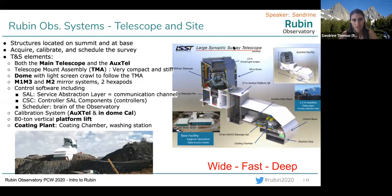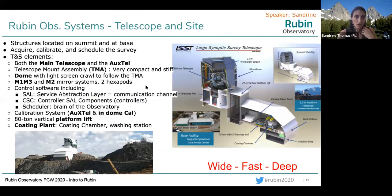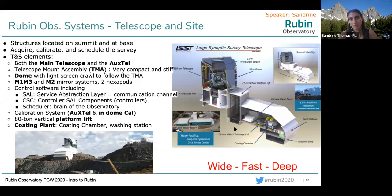We also have a calibration system that includes an auxiliary telescope and an onboard calibration for taking flat fields. For maintenance purposes, we have an 80-ton vertical platform lift — shown in the cartoon on the right — which goes from the telescope level to the bottom level, allowing us to move the M1M3 when it needs to be re-aluminized. The cooling plant with all the material necessary to re-aluminize the mirrors is at the bottom, and it's huge.